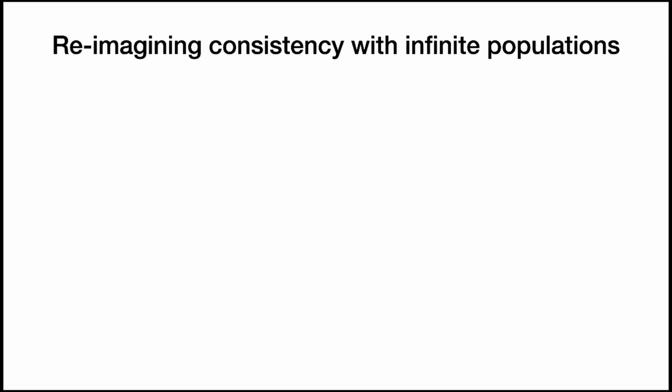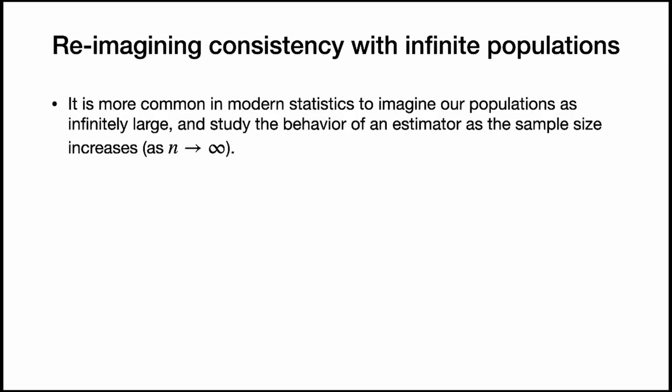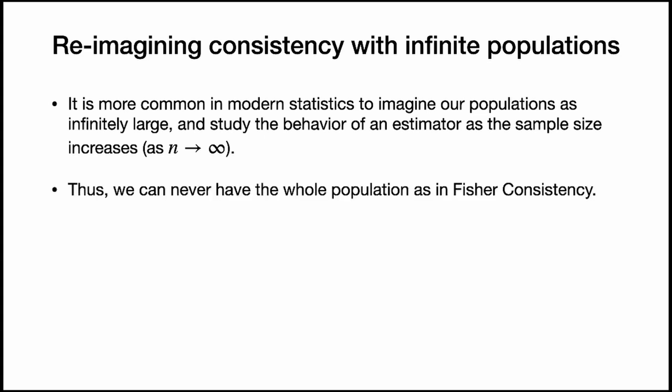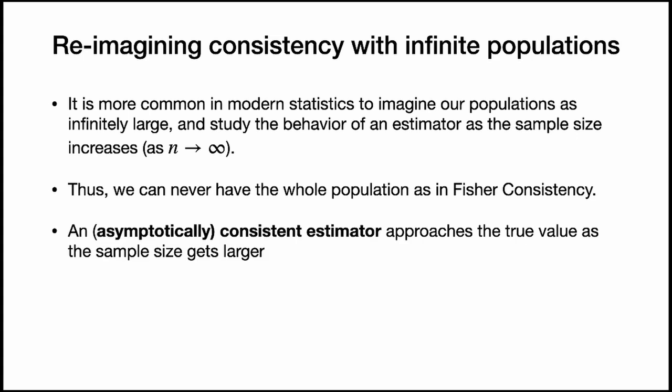Let's reimagine consistency, because it's more common in modern statistics to imagine populations as infinitely large and to study the behavior of an estimator as the sample size increases — as n approaches infinity. Thus, we can never really have the whole population as in Fisher consistency. So an asymptotically consistent estimator approaches the true value as the sample size gets larger. We say an estimator theta-hat is consistent for theta if theta-hat converges to theta as n approaches infinity.